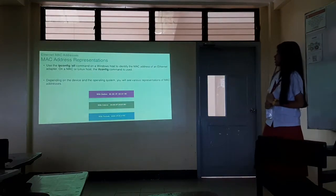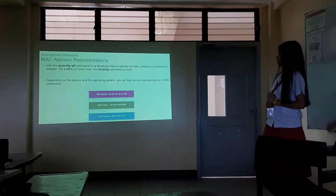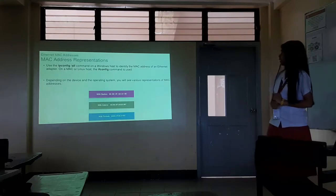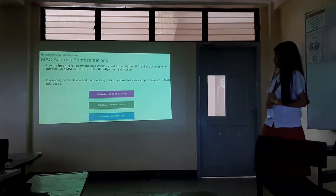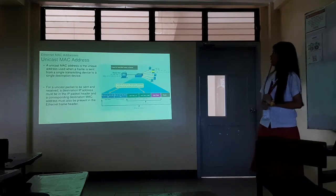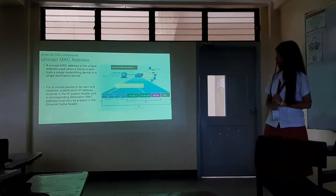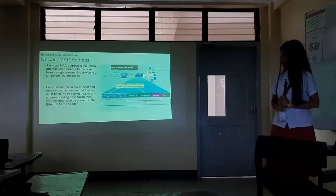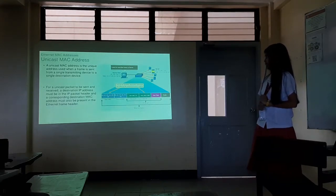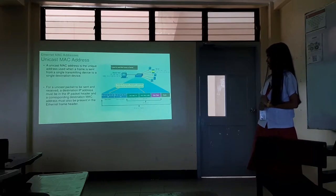MAC address representation: using the ipconfig command on Windows or ifconfig on a Mac or Linux system to identify the MAC addresses of a network adapter. Depending on the device and the operating system, you will see various representations of MAC addresses. A unicast MAC address is used when a frame is sent from one transmitting device to a single destination device. For a unicast packet to be sent and received, a destination IP address must be in the IP packet header, and a corresponding destination MAC address must also be present in the Ethernet frame header.